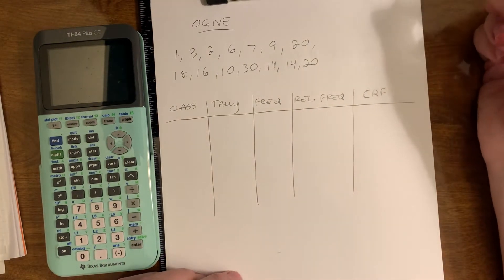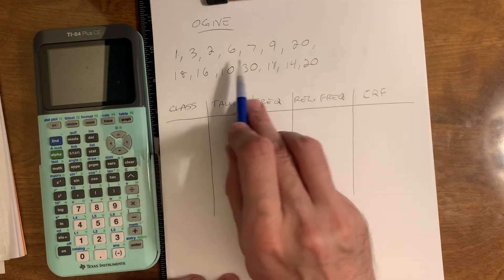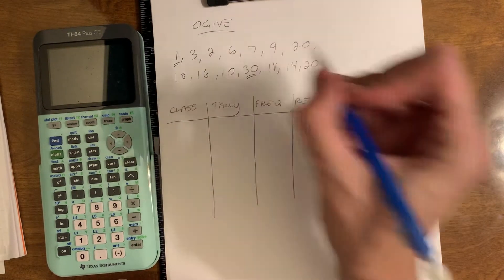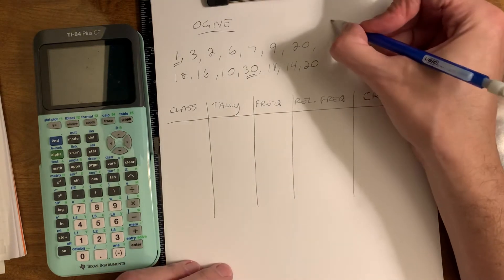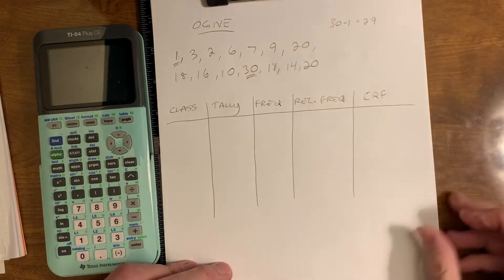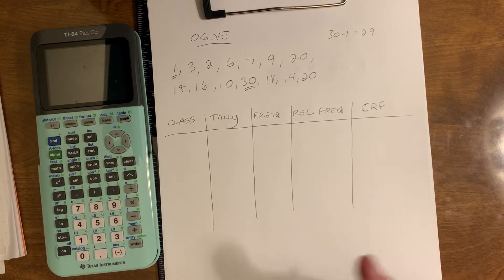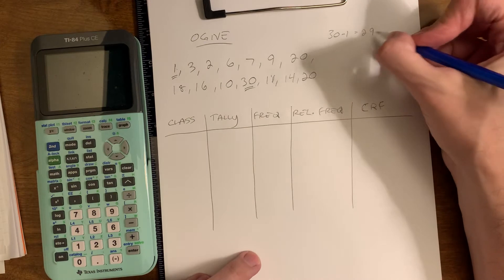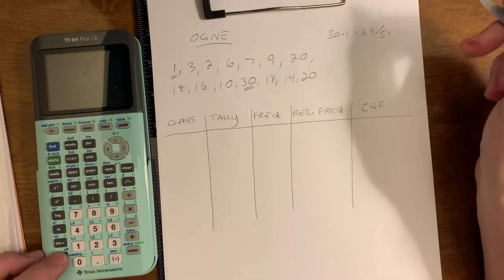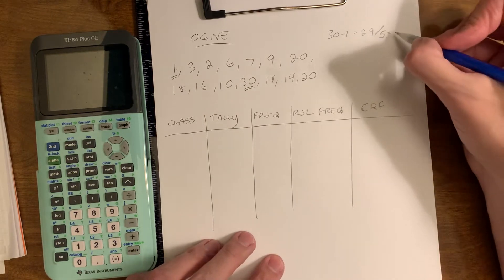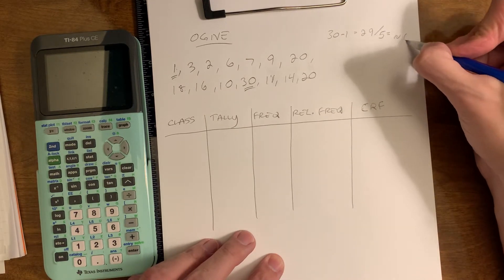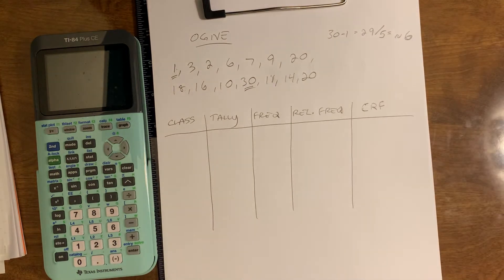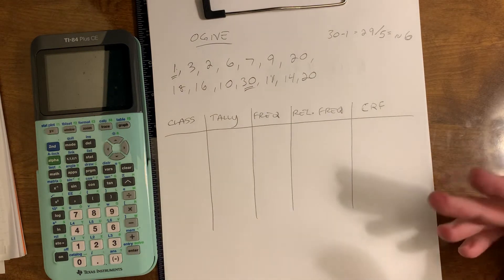Just like with a histogram, we have to find our class width. We take the range. If you look at these values, they're not in order, but I do see that 30 seems to be my high value and 1 appears to be my low value. So 30 minus 1 equals 29. That's our range. We're going to deal with a small set of numbers here, so 5 classes is our target. 29 divided by 5 is 5.8, so we're going to approximate 5.8 to the number 6.